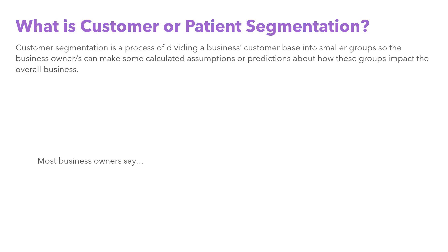In short, the customer persona can be identified by doing customer segmentation. What customer segmentation is all about is basically looking at your entire customer base and breaking it down into small groups with some calculated assumptions and predictions of what these groups are and how these groups impact a particular business.